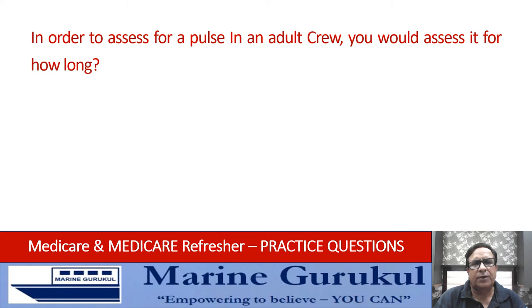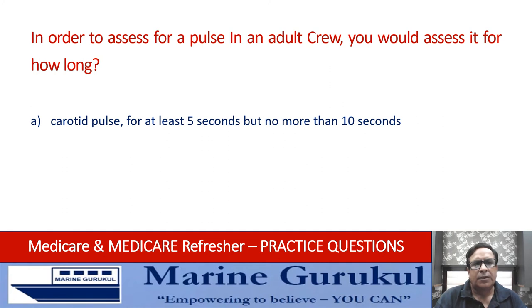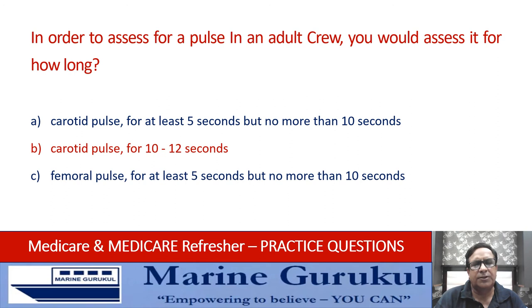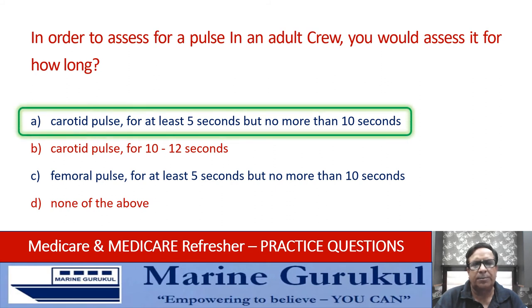In order to assess for a pulse in an adult crew member, you would assess it for how long? Carotid pulse for at least 5 seconds but no more than 10 seconds, carotid pulse for 10 to 12 seconds, femoral pulse for at least 5 seconds but no more than 10 seconds, or none of the above? In the case of an adult crew member, it shall be the carotid pulse, observed for not less than 5 seconds and up to 10 seconds.